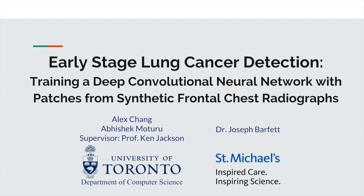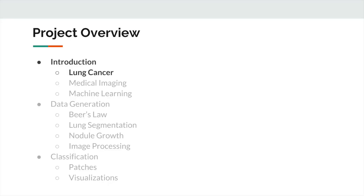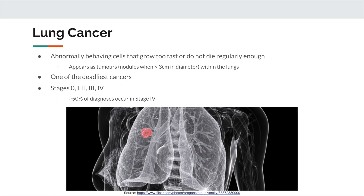This is early stage lung cancer detection, training a deep convolutional neural network with patches from synthetic frontal chest radiographs. Lung cancer is caused by abnormally behaving cells that either grow too fast or do not die regularly enough, causing them to grow into and destroy neighboring cells. These cells form tumors, commonly called nodules when they're less than 3 centimeters in diameter. As of 2018 in Canada, lung cancer has the highest projected incidence and mortality rate of all cancers, and also one of the lowest 5-year net survival rates, with about 50% of diagnoses occurring during stage 4 when the cancer has already metastasized. Since early detection is crucial for good prognosis, this project focuses on detecting lung nodules in early stages.